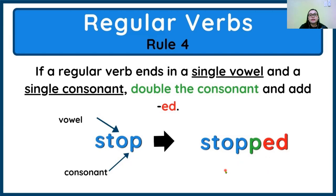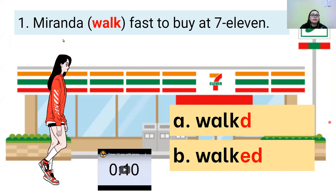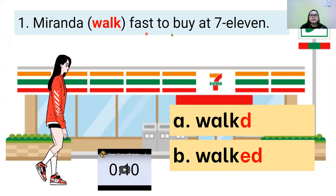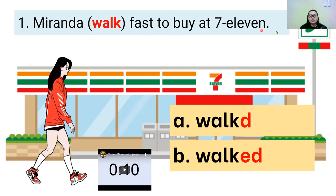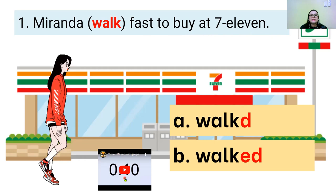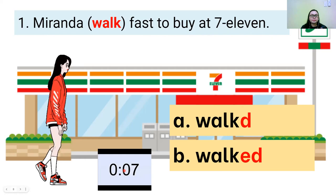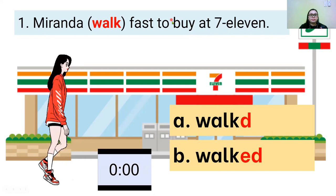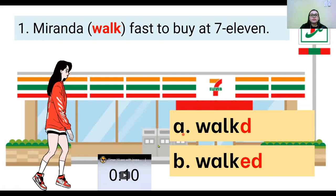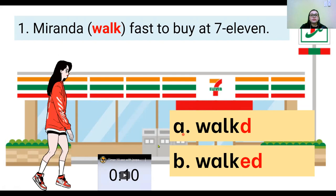Now you need your whiteboard and marker. Please write the letter of the correct answer. Let me read the sentence: Aranda walked fast to buy at 7-Eleven. Can you please read the sentence again? Write the letter of your answer, A or B. You have ten counts. The correct answer is B with E.